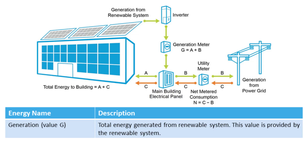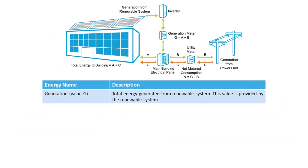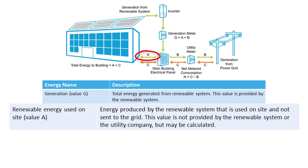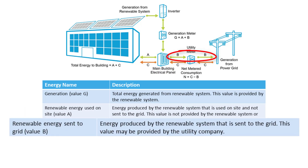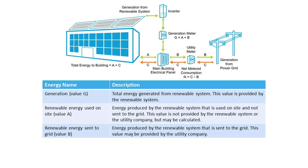Not all energy generated on-site will necessarily be used by the building. If at any moment more energy is being generated than is required to operate the building, this excess generation may be sold back to the grid. The diagram differentiates between Flow A, which is the amount of energy generated on-site and used on-site, and Flow B, which is the amount of energy generated on-site and exported to the grid. Being able to differentiate these values is important to accurately assess the energy performance of your property.